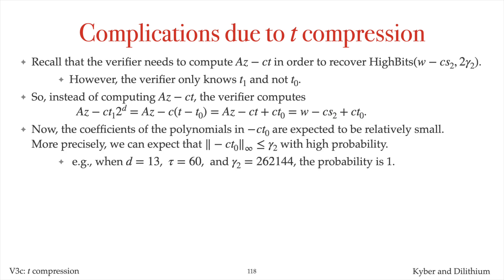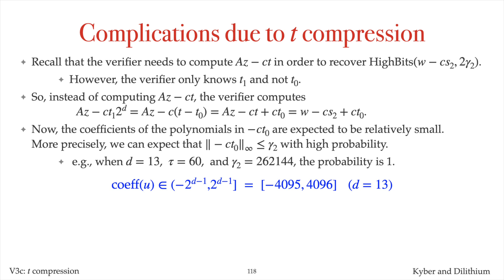This problem of computing the high bits of w minus cs2 without knowing t0 can be solved with hint bits. One can expect that the polynomial vector minus ct0 has infinity norm at most gamma2 with high probability. For example, in the MLDSA87 parameter set, we have d equals 13, tau equals 60, and gamma2 equals 262,144. Exactly 60 of the 256 coefficients of the polynomial minus c are minus 1 or plus 1, and the other coefficients are 0. Also, the coefficients of each polynomial u in the vector t0 are in the interval between minus 2 to the d minus 1 and 2 to the d minus 1 — so between minus 4095 and 4096 when d equals 13.